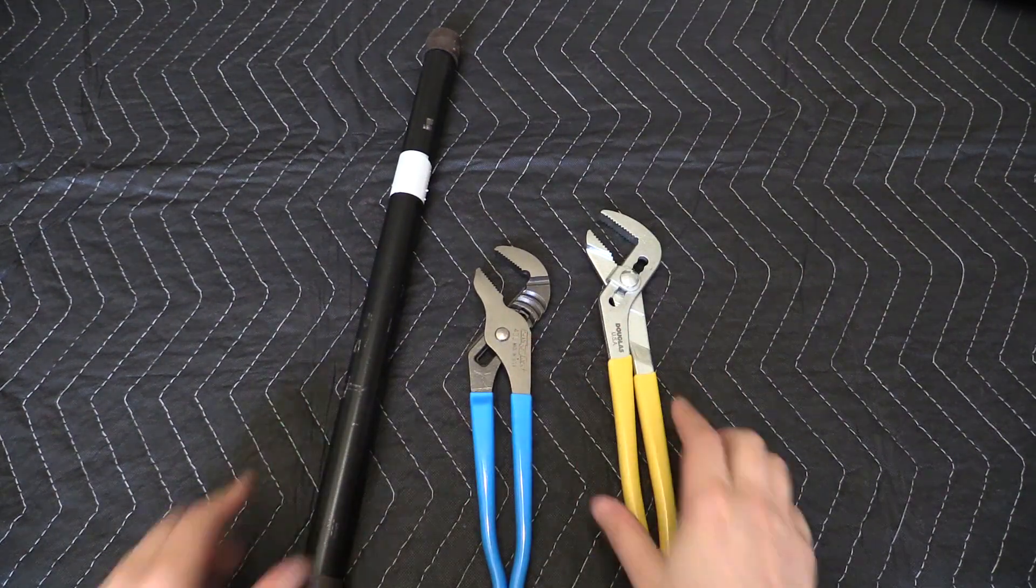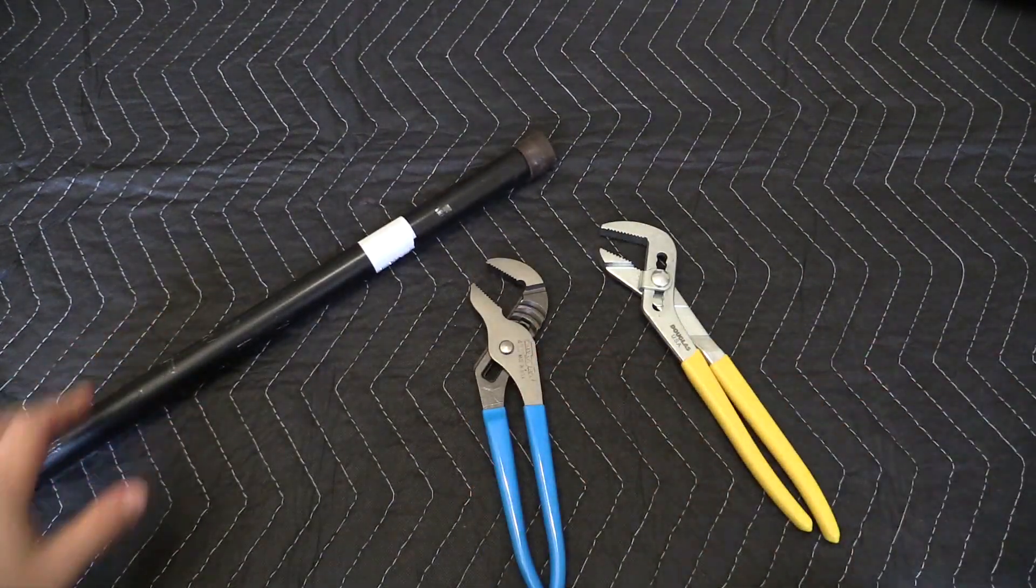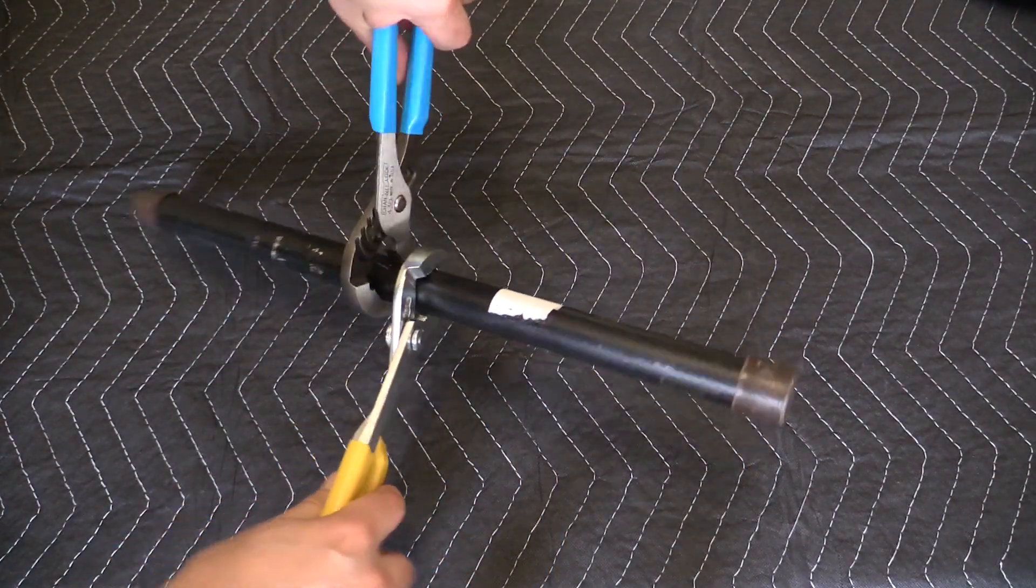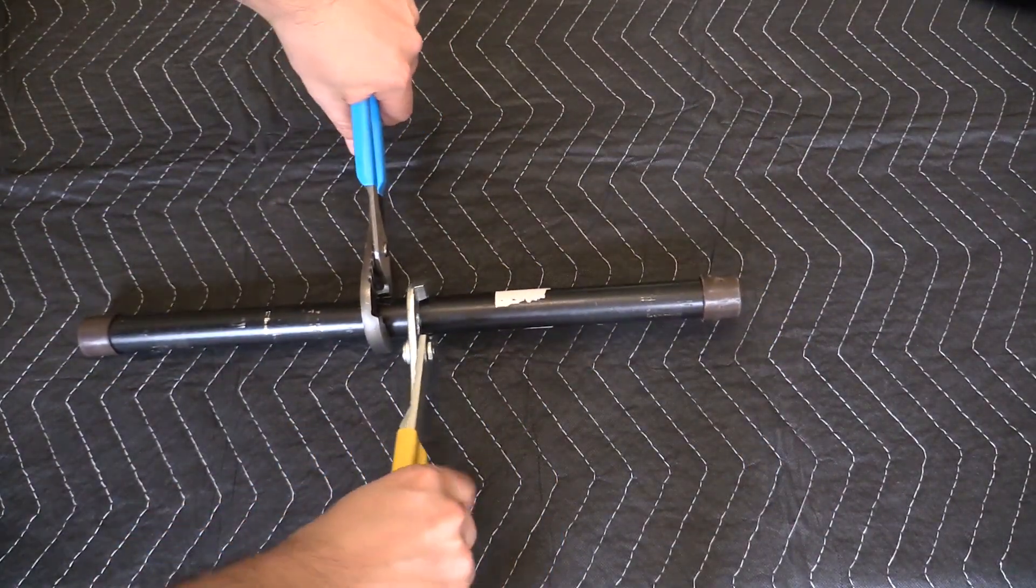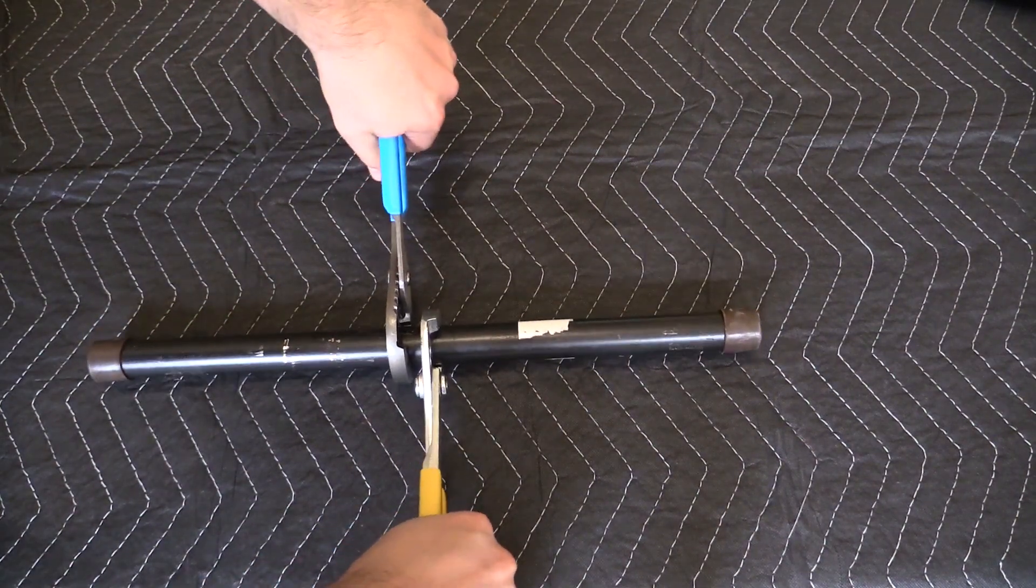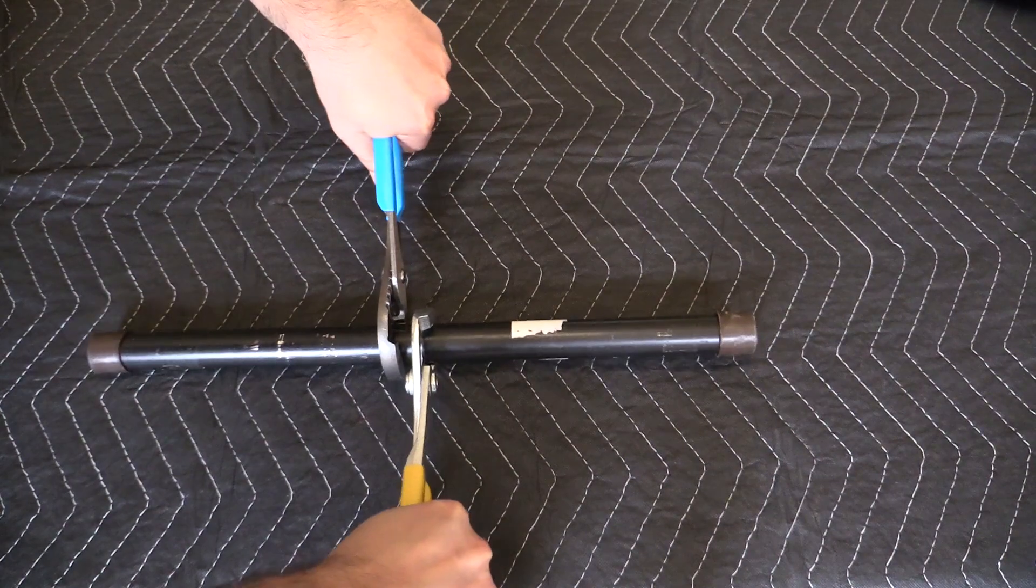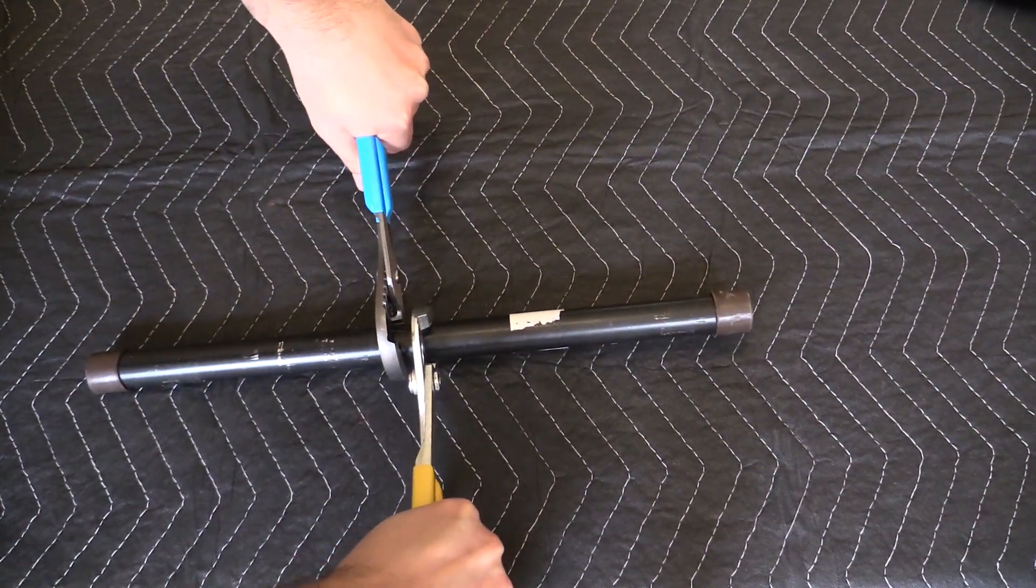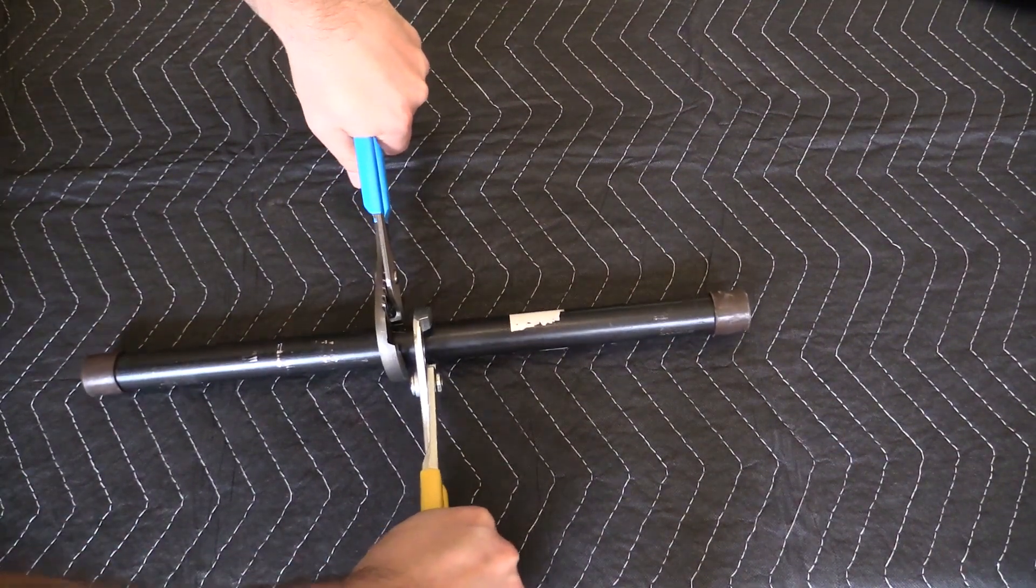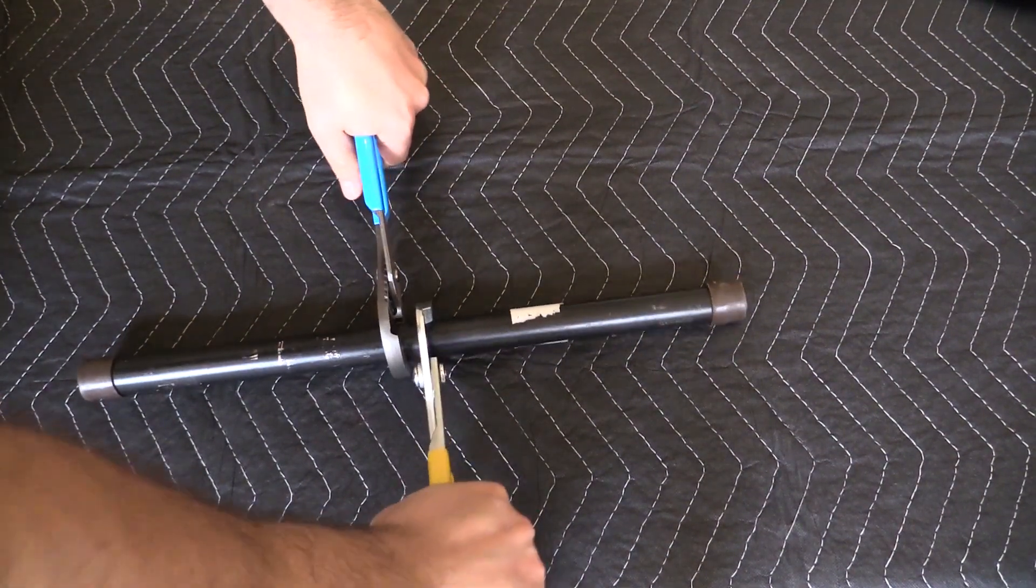So let me give you a quick demonstration. All right, right now I have both the channel locks and the Douglas pliers gripping against each other. I'm just gonna grip and see which one slips. I'm putting a lot of force on this but neither one of these are slipping.